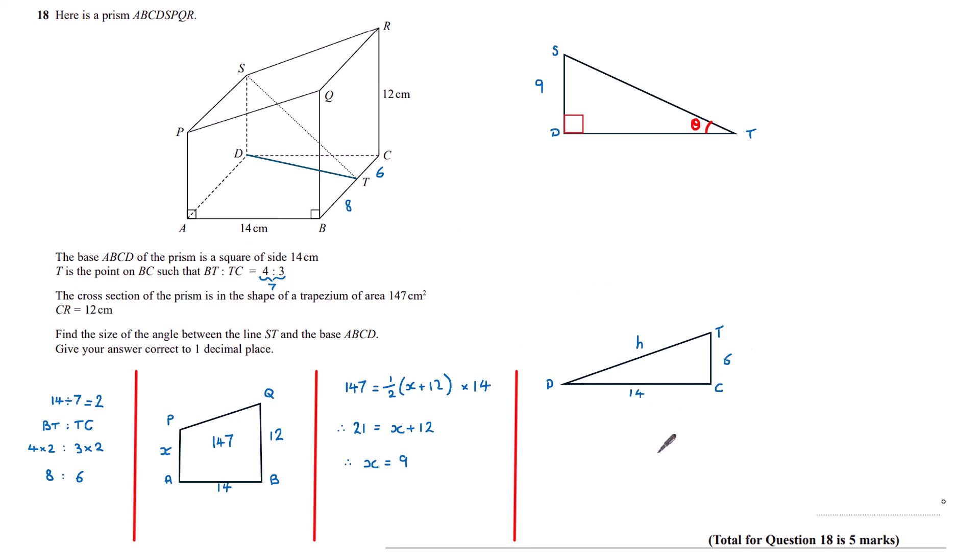I can use Pythagoras' theorem to say that H squared is equal to 6 squared plus 14 squared. I can evaluate that on a calculator. H squared is 232, and so H is 2 root 58, which I can now put as the length DT on this right-angled triangle.